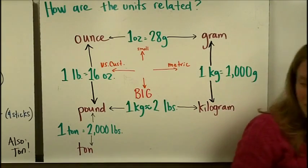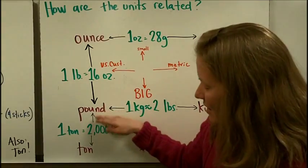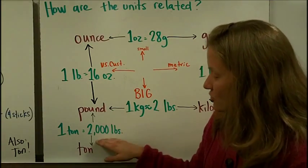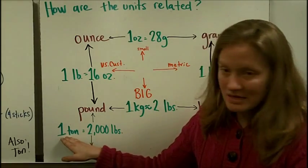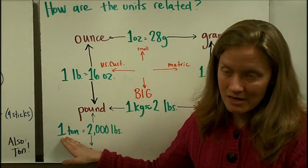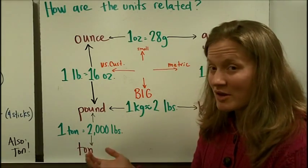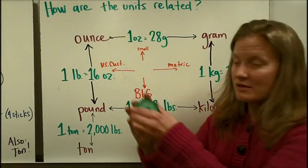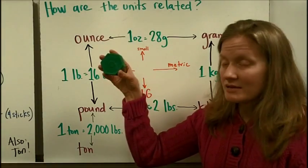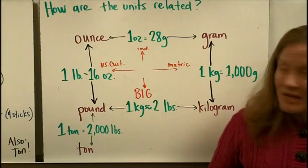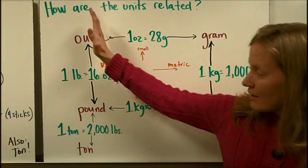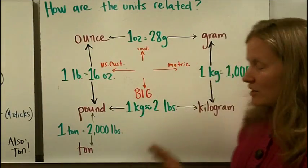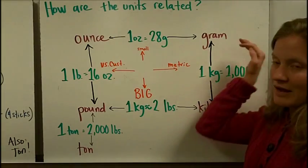Now let's go from pounds to tons. It would take 2,000 pounds to equal a ton — so 2,000 boxes of butter to equal a ton. That's how U.S. customary units are related to each other, and how metric units are related to each other.